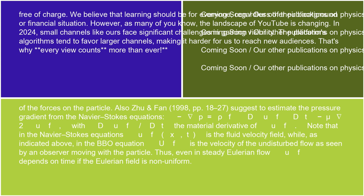-∇p = ρ_f du_f/dt - μ∇²u_f, with du_f/dt the material derivative of u_f. Note that in the Navier-Stokes equations u_f(x,t) is the fluid velocity field, while,